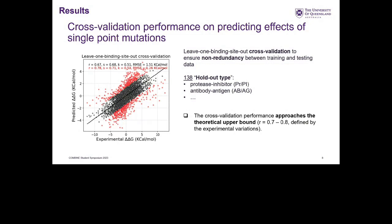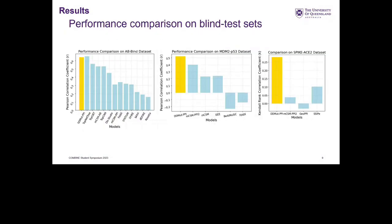The model achieved a Pearson's correlation of 0.67 on the cross-validation, approaching the theoretical upper bound defined by experimental variations such as different temperatures and pH values. I also compared performance on several blind test sets against other methods in the field. The first dataset is AB-Bind, which includes only antibody-antigen complexes; the second is a deep mutational scan dataset on the MDM2-p53 complex; and the last is SARS-CoV-2 spike and ACE2. Across all datasets, DDMut-PPI outperformed competing tools.